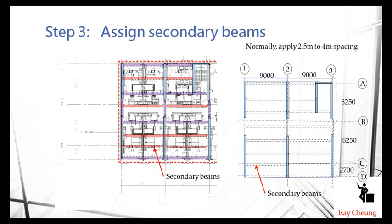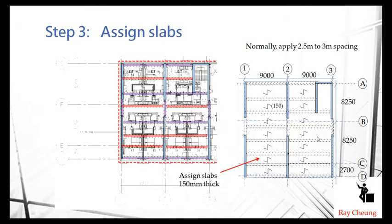After that, we normally add the secondary beams. You need to imagine, normally about 2.5 meters to 4 meters, we need a secondary beam. Then we just fill in these two for the bay below and fill in one due to the dimension given. This is the framing plan like this.